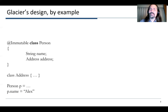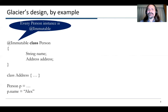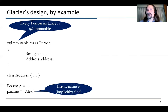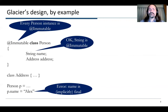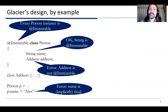Let me talk a little about the design we came up with. Glacier is an extension to Java with annotations — it's implemented in the annotation checker framework. It's as simple as putting an immutable annotation on classes. You write 'immutable class Person,' which says that every instance of Person is immutable — that's why we call it a class immutability system. If you assign to fields, you'll get an error, because all the fields are implicitly final. You don't have to actually declare them that way, but they are.